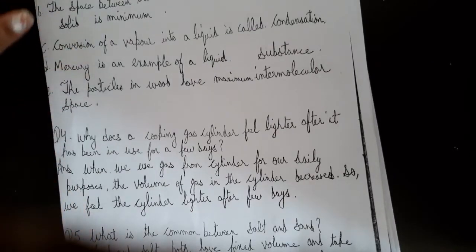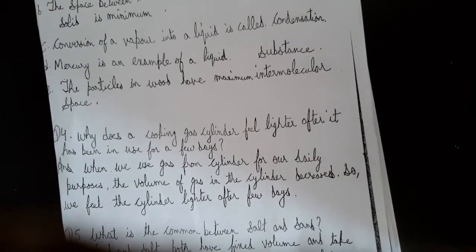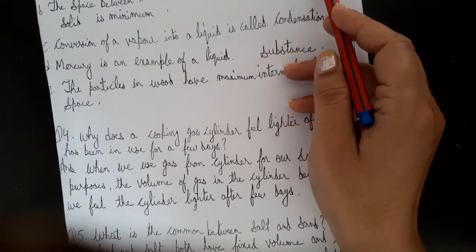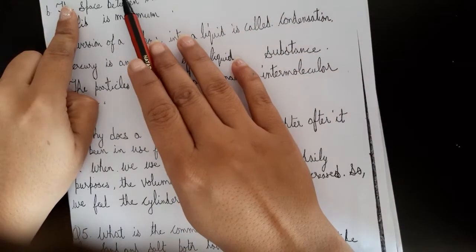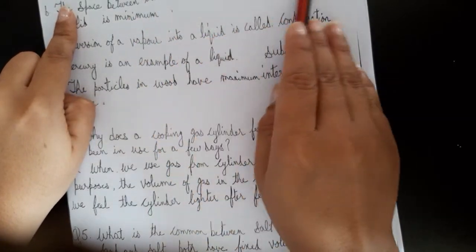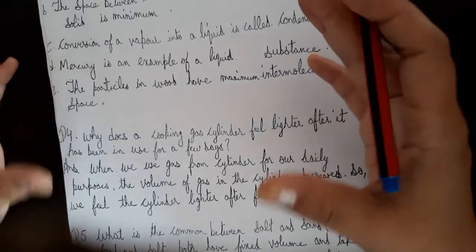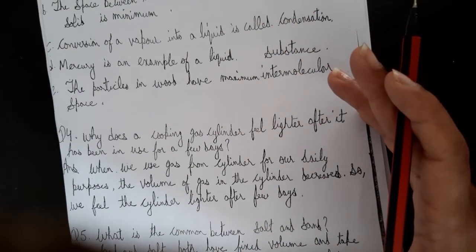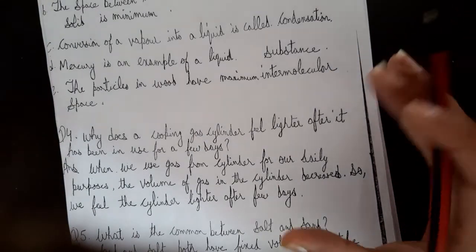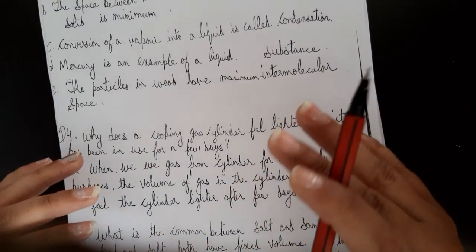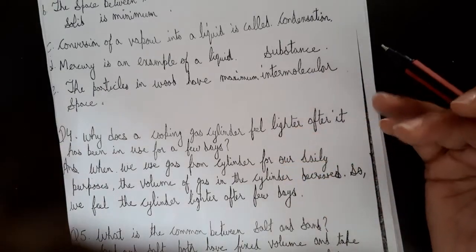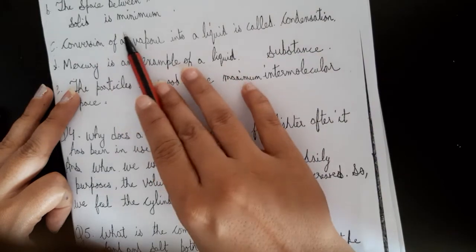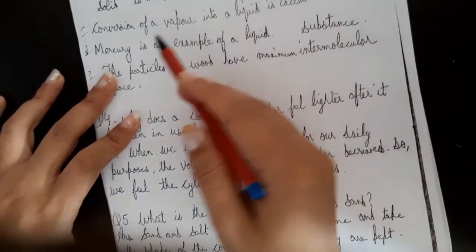Complete the statement: Solid and liquids have a definite shape, but gases do not. The molecules in gases are very far apart from each other, so the intramolecular space is larger in the gaseous state. The space between the atoms in gas is maximum, while in solid and liquid it is minimum.